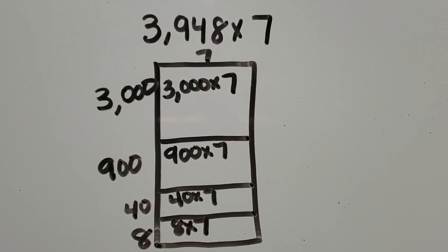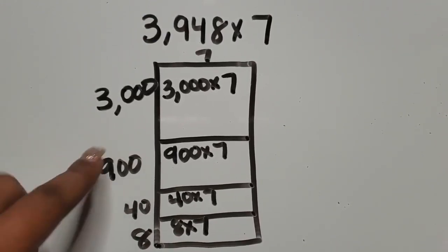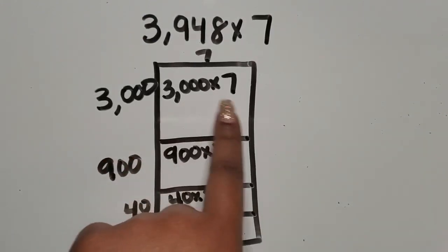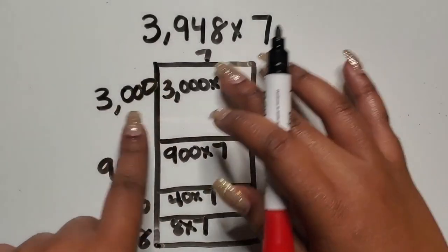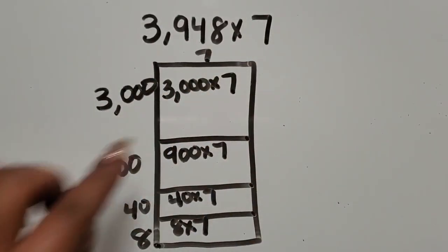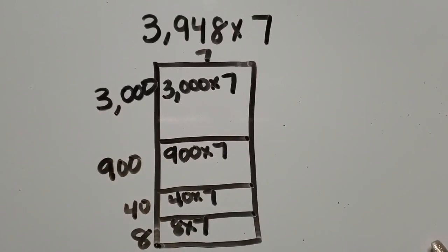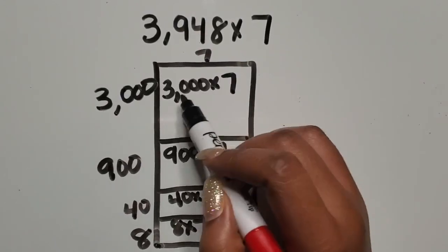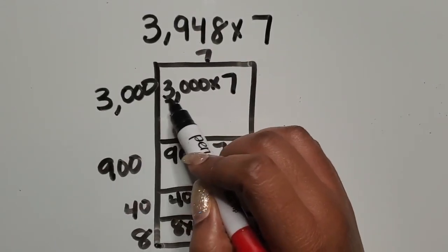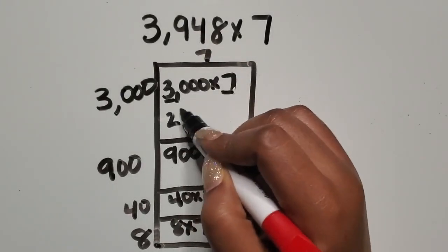After time and lots of practice with this strategy, students will tend to not write the expression anymore — they'll just figure out the product and write their products in the rectangle. But it's a process, so when students are ready, they can do it that way. So again, three times seven is twenty-one.